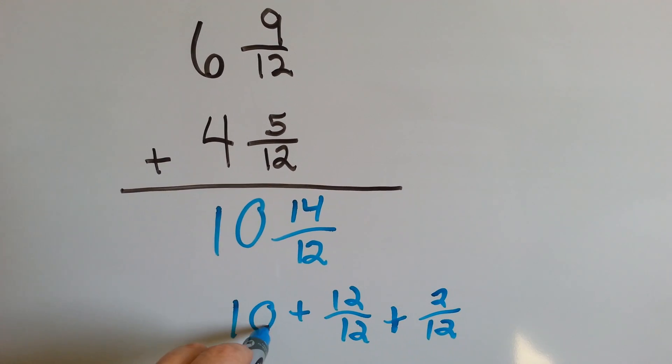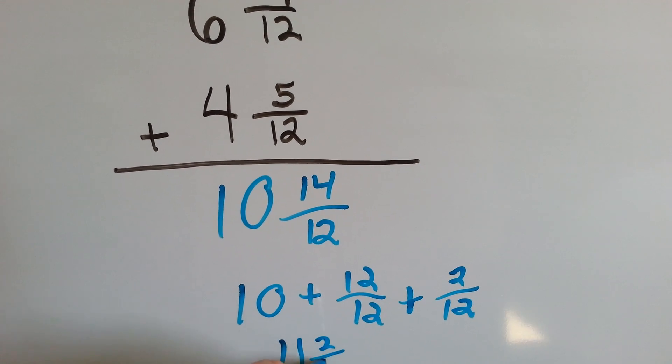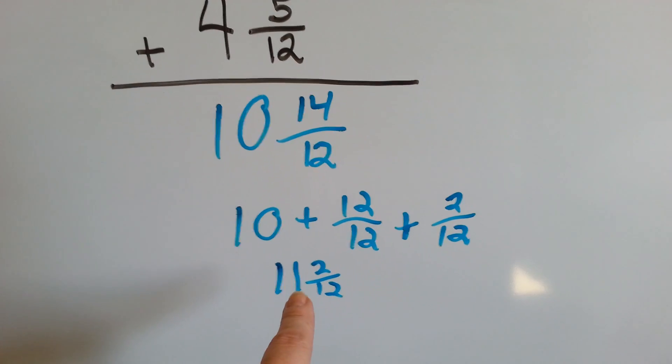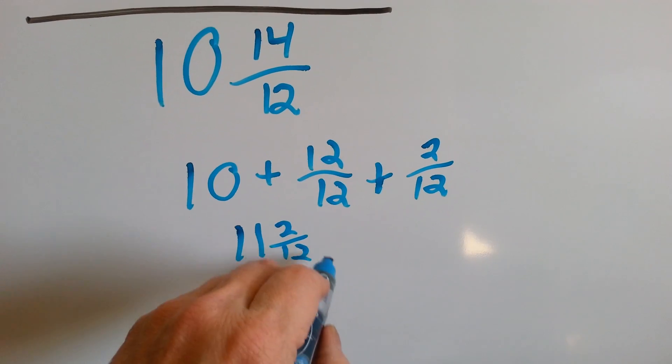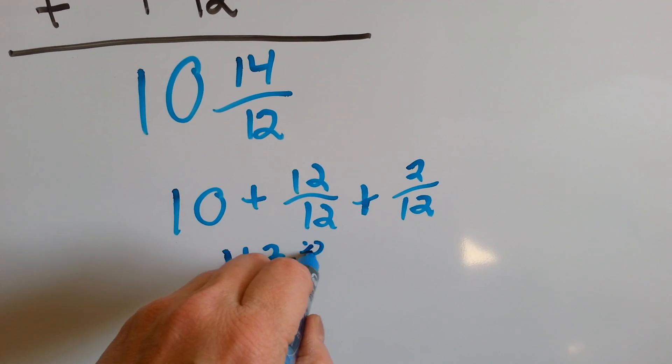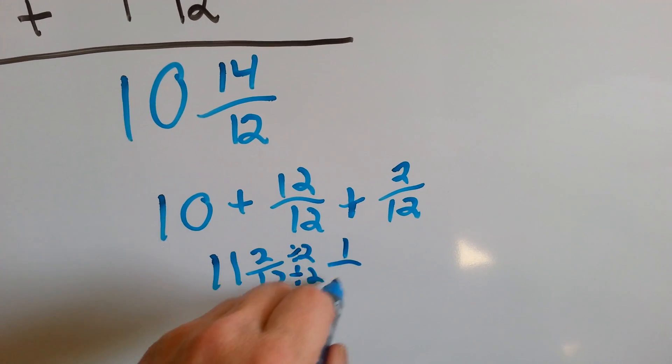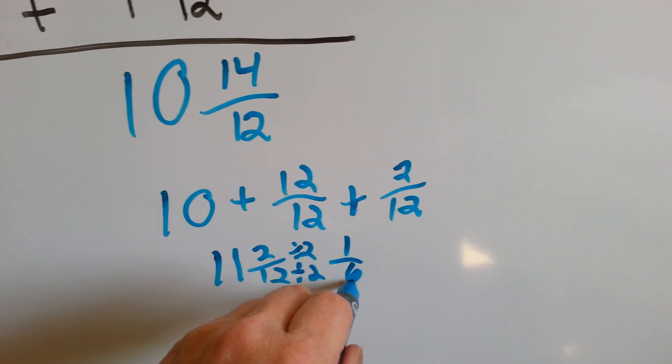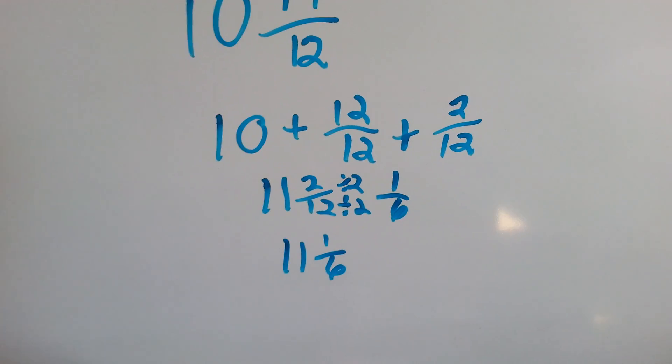That means we have 10, 11, and 2/12. But it's not simplified. These are both even numbers. And 2 can go into both of them. So if we divided the 2 by 2 and the 12 by 2, what would we get? 2 divided by 2 is 1. 12 divided by 2 is 6. We would end up with 11 and 1/6 as our final answer.